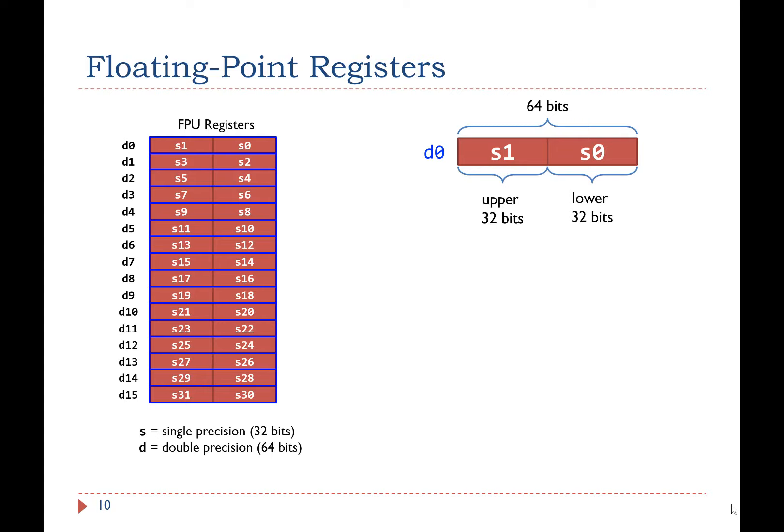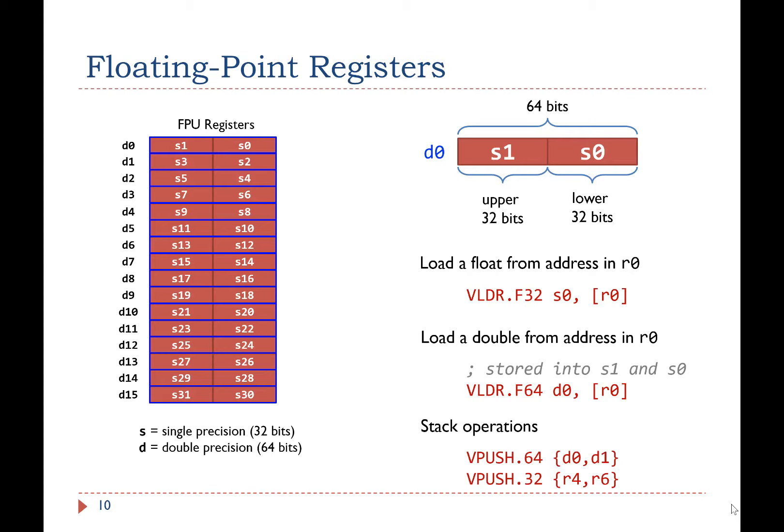Let me show you a few assembly instructions. We can use this instruction to load a single precision floating-point number stored at the memory address in R0. We can use this to load a double precision value from the memory. FPU on Cortex-M4 doesn't support double precision floating-point calculations, but assembly instructions can still load or store double precision data. These are two push instructions that push single and double precision registers onto the stack.